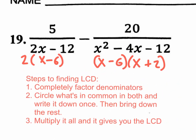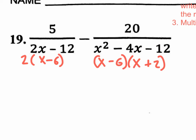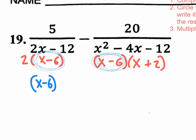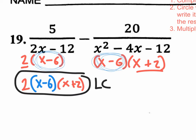Step two: circle what's in common in both denominators and write it down once — keyword, once. Looking at both denominators, the binomial X minus six appears in the first and also in the second. Write it down once. Then bring down the rest: bring down the two, and bring down the X plus two. Put it all together with multiplication, and this is our LCD — our least common denominator.